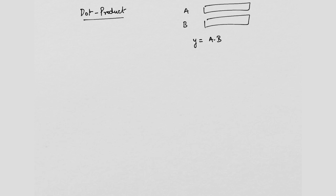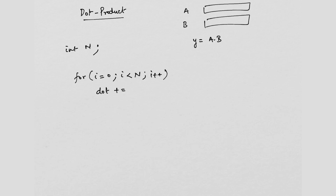Let us first write the sequential code. Suppose the size of the vectors is given in a variable N. You compute the dot product with a simple loop: for i = 0; i < n; i++, and you say dot += A[i] * B[i]. Initially, dot is initialized to 0. We will assume all data to be of type double — double precision floating point.